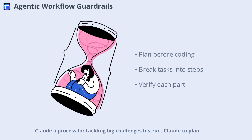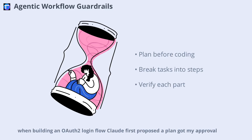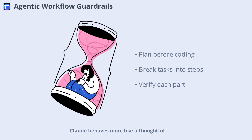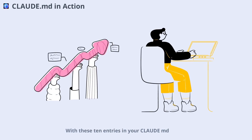Complex tasks require structure, and the Agentic Workflow Guardrails entry gives Claude a process for tackling big challenges. Instruct Claude to plan, execute in steps, and verify each part before moving on. For example, when building an OAuth 2.0 login flow, Claude first proposed a plan, got my approval, and then implemented each step modularly. You can even define custom trigger words for planning modes or integrate sub-agent strategies. With these guardrails, Claude behaves more like a thoughtful project partner than an over-eager junior dev.